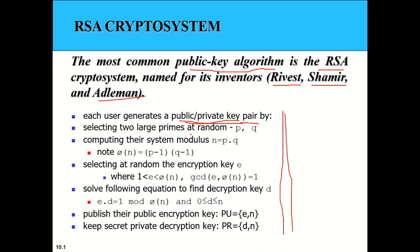We start by selecting two prime numbers randomly, naming them P and Q, then we compute N = P × Q. Finding N from P and Q is easy, but factoring N back into P and Q is difficult. That is why we start by choosing P and Q, multiply them, and find N. We never choose N and then try to factor it.